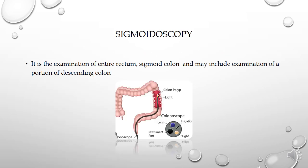Another procedure we will come across while taking code is sigmoidoscopy. Colonoscopy means examination of the entire large intestine — cecum, colon, rectum, everything. Sigmoidoscopy is the examination of the entire rectum, sigmoid colon, and may include examination of a portion of the descending colon. The colonoscope is inserted through the anus to the rectum, to the sigmoid colon, and then a portion of the descending colon only — it will not extend beyond that.